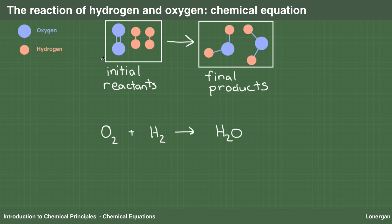The chemical formulas on each side are separated by plus symbols. The ratio in which molecules combine or are formed are given by numbers, called coefficients, before each chemical formula. One oxygen molecule, two hydrogen molecules, to form two water molecules. It is conventional to omit any one as a coefficient, so I will erase that.